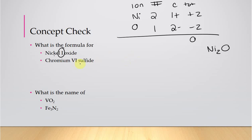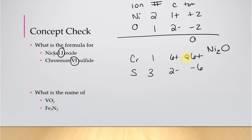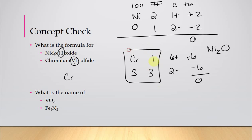For chromium(VI) sulfide: chromium has a +6 charge from the Roman numeral; sulfur has a −2 charge because it's in group 6. Lowest common denominator is 6, so we need 1 chromium and 3 sulfurs: 1 × 6 = +6 and 3 × 2 = −6; six minus six is zero. The formula is CrS₃ — we don't write the 1.